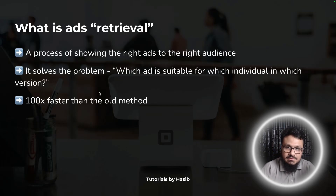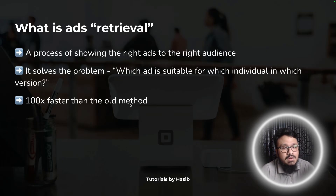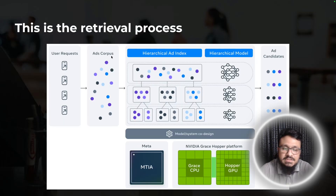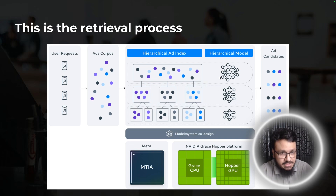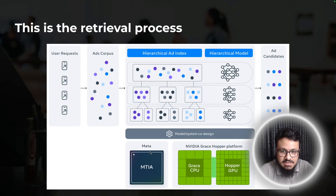Meta has data on each individual — which type of ad they like. For a standard linear algorithm, this process could take ages given millions of people and millions of ads. But with Andromeda, this process is 100 times faster than the old method, made possible because Meta collaborated with Nvidia and is running their algorithm on Grace Hopper chips. This is referenced in Meta's official documentation, which will be linked in the video description.